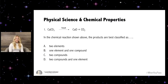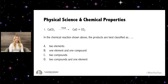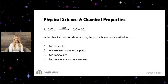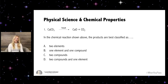Question one. CaCO3 yields CaO plus CO2. In the chemical reaction shown above, the products are best classified as: A, two elements; B, one element and one compound; C, two compounds; or D, two compounds and one element. I'll give you 60 seconds to think about that and we'll come back and go over the answer.